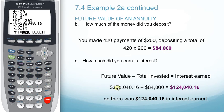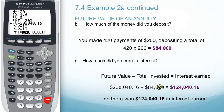In order to determine the amount we earned in interest, we take the future value we calculated from the TVM solver — $208,040.16 — minus the amount of deposits we made, $84,000, to get the interest earned of $124,040.16.